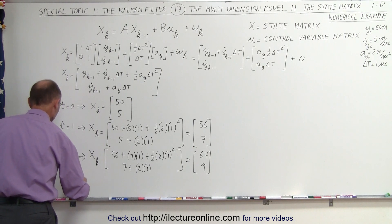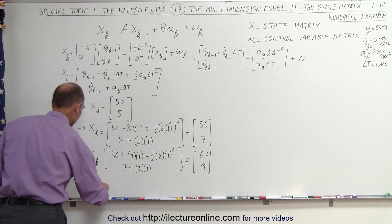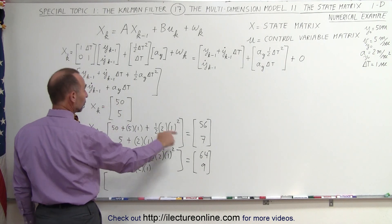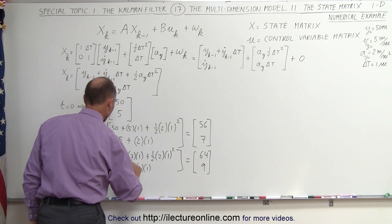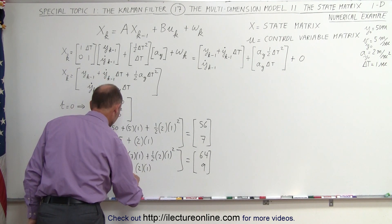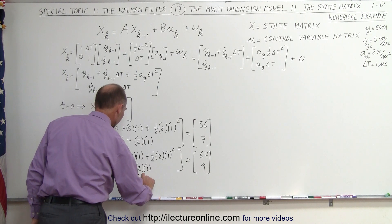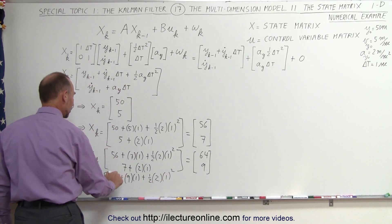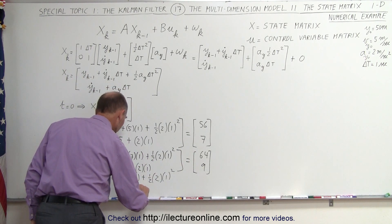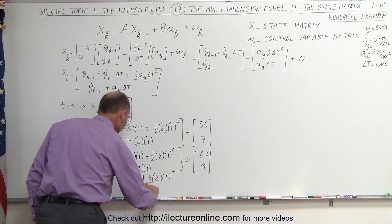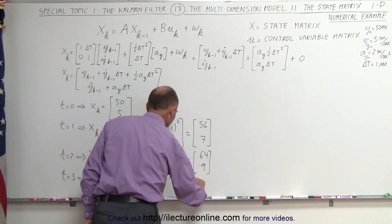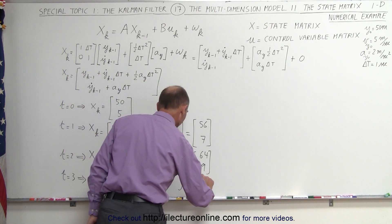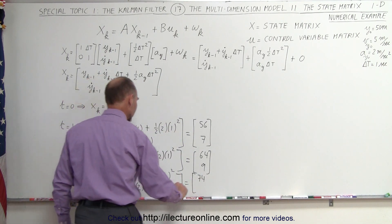Time is equal to 3. X sub K, one time interval later — the previous position was 64, plus the velocity (9) multiplied times delta T, plus one half times acceleration times delta T squared. The previous velocity is 9, plus the acceleration times delta T. Our new state matrix becomes 64 plus 9 is 73, plus 1 is 74. The velocity is 9 plus 2, which is now 11.